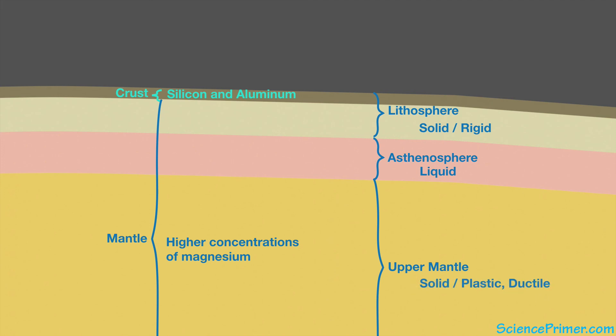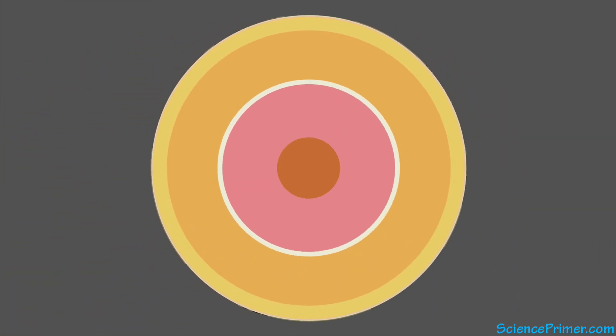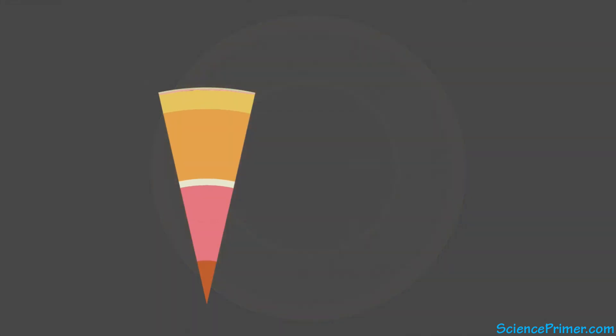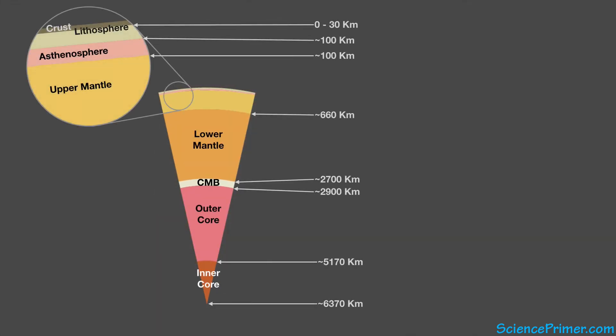Each of the remaining boundaries represents changes in the composition of the Earth, due to the original density-driven sorting that occurred during the planet's formation, and the behavior of different elements and minerals at the immense temperatures and pressures found at these depths.